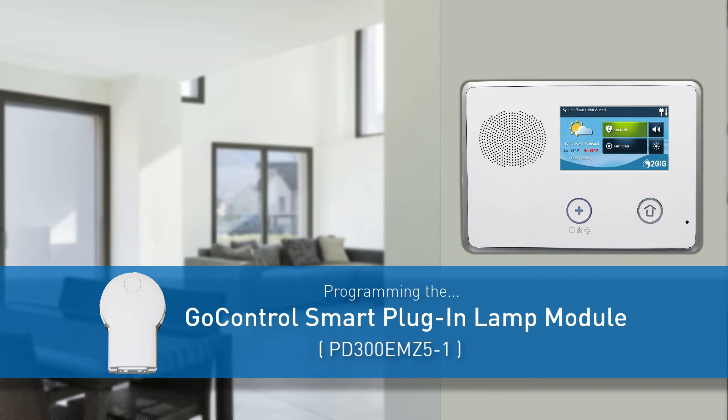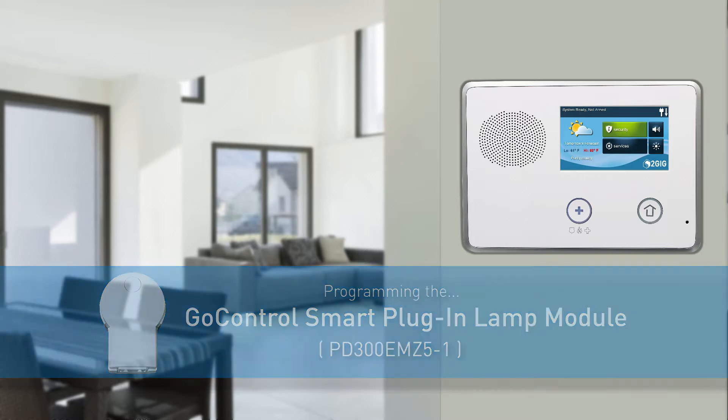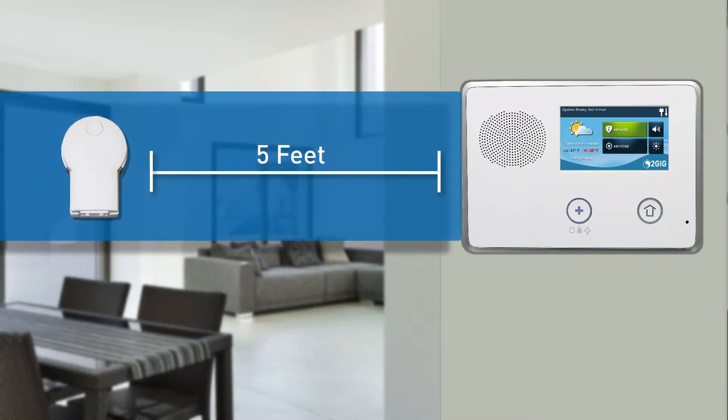To program a GoControl Smart Plug-in Lamp Module into a GC2 panel, ensure the panel and device are within 5 feet of each other.